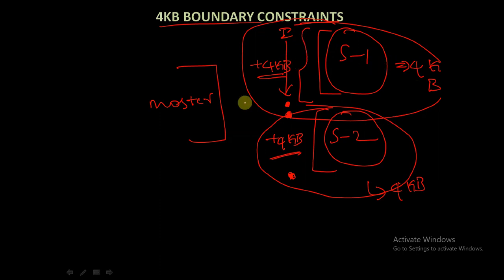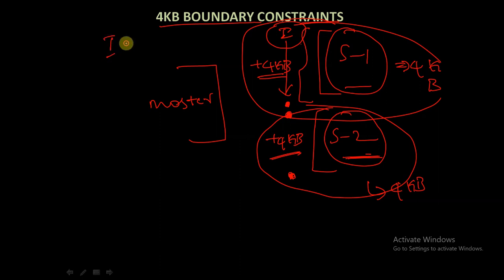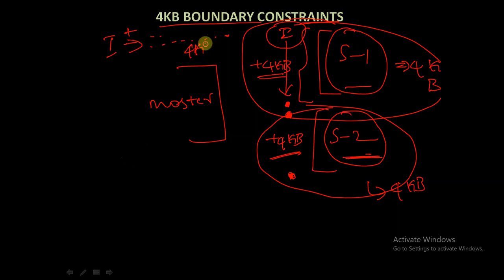One set of 4KB memory is given to slave 1 and another 4KB is given to slave 2. When the master sends data, slave 1 increments its address from the initial address provided by the master, storing the burst data items. After reaching the 4KB boundary limit, slave 1 must not go beyond that boundary — the memory is divided between slaves to differentiate them.